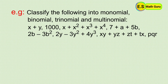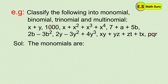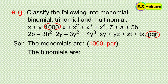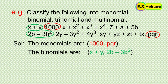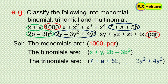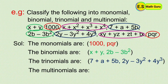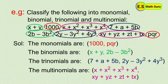Let us divide them as per the number of terms. The monomials are 1000 and pqr. The binomials are x plus y, 2b minus 3b squared, and x plus x squared. The trinomials are 7 plus a plus 5b and 2y minus 3y squared plus 4y cubed. The multinomials are x plus x squared plus x cubed plus x to the power 4 and xy plus yz plus zt plus tx. Thank you.